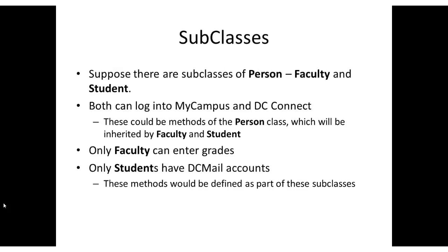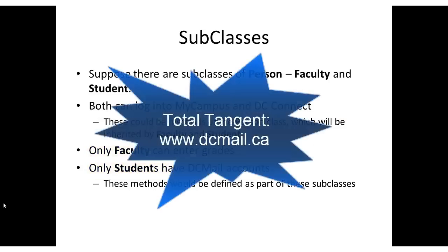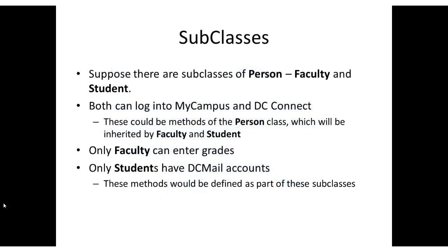Suppose there are subclasses of Person — let's go with Faculty and Student. They're going to have all of those properties mentioned earlier, but also some of their own. They can both log into MyCampus and DCConnect, so maybe logging into those services are methods. Only faculty can enter grades, and only students have DCmail accounts. This is a good opportunity to remind you that you have a DCmail account — it seems like DCmail is not well advertised yet, so I'd encourage you to log in and check it.